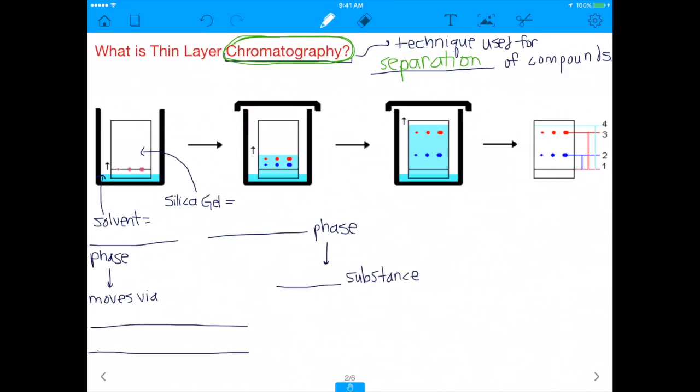In our case, thin layer chromatography is referring to the fact that we have this kind of paper, which is a thin layer of paper, and that paper is usually made out of silica gel. The silica gel is the stationary phase in this case. What do I mean by stationary phase? Well, the stationary phase in chromatography is the one that doesn't move. So in this case, the paper is going to stay the same, the silica gel is going to stay in one place and pretty much not move.